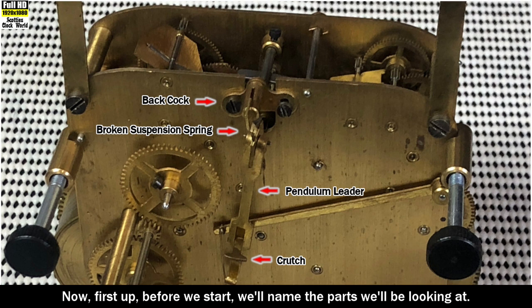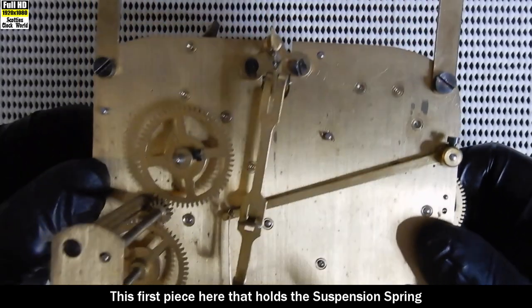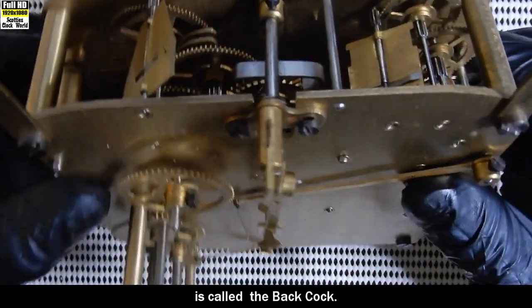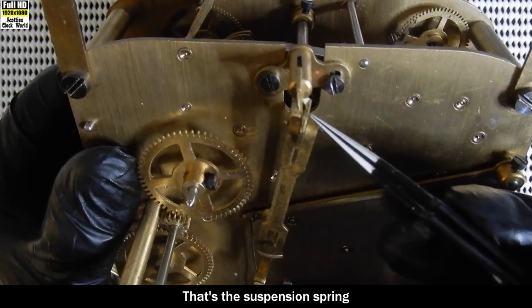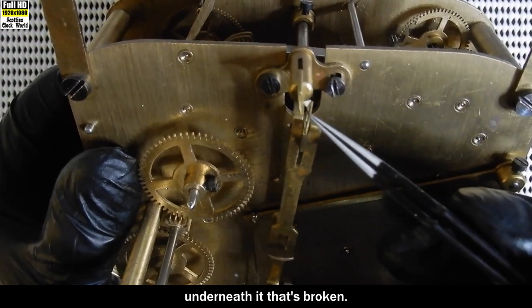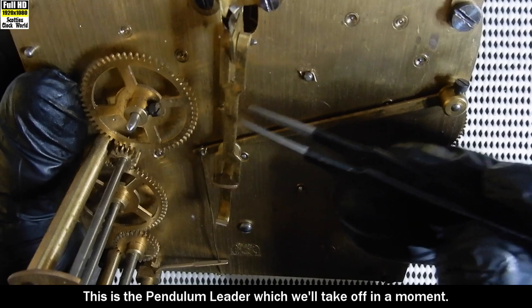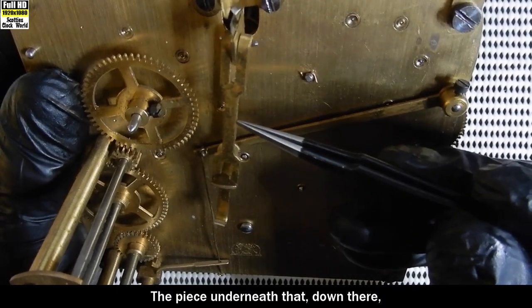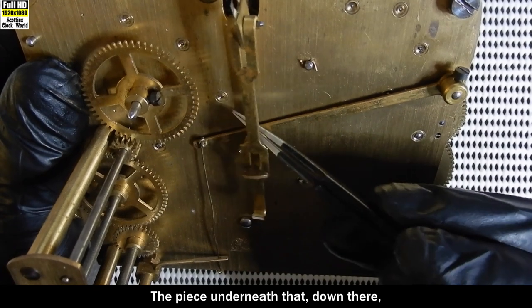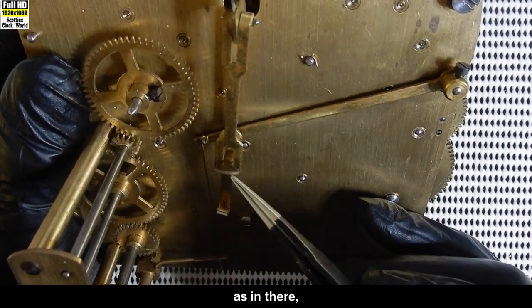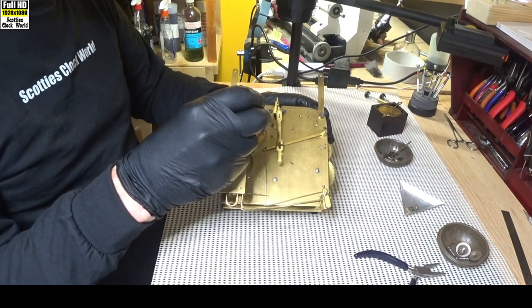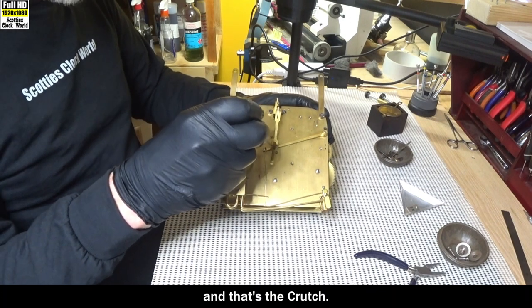Now first up before we start, we'll name the parts we'll be looking at. This first piece here that holds the suspension spring is called a back cock. That's the suspension spring underneath it that's broken. This is the pendulum leader which we'll take off in a moment. The piece underneath that down there is called a crutch. That's the pendulum leader and that's the crutch.